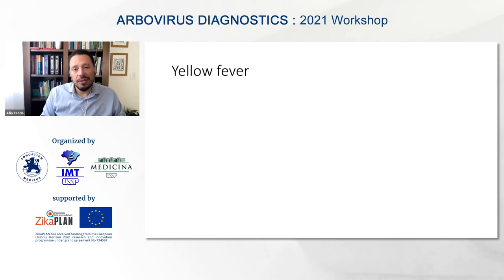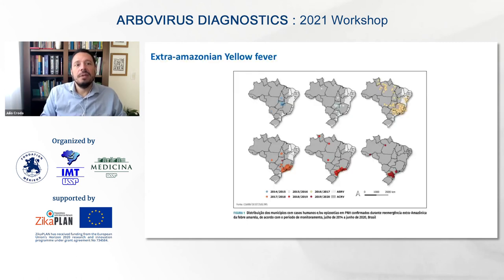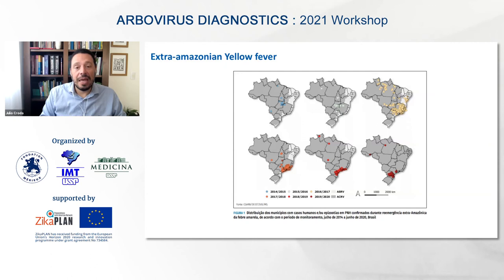The last arboviral disease with impact in Brazil and across Latin America is yellow fever. The majority of cases were concentrated in Brazil. In the past, yellow fever was concentrated in the Amazon region, related to cases occurring among unvaccinated people entering the forest.